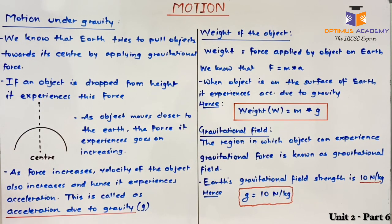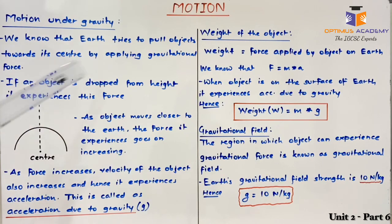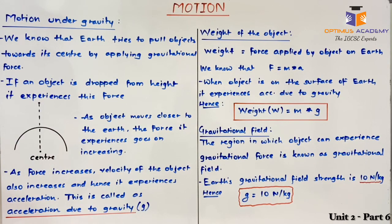When an object is dropped from a certain height, it moves towards the surface of the earth. Or when you jump on the surface of the earth, you are again pulled back towards the surface of the earth. This pull is due to the gravitational force applied by earth, which originates at the centre of the earth. The gravitational force applied by earth tries to pull all objects towards its centre.